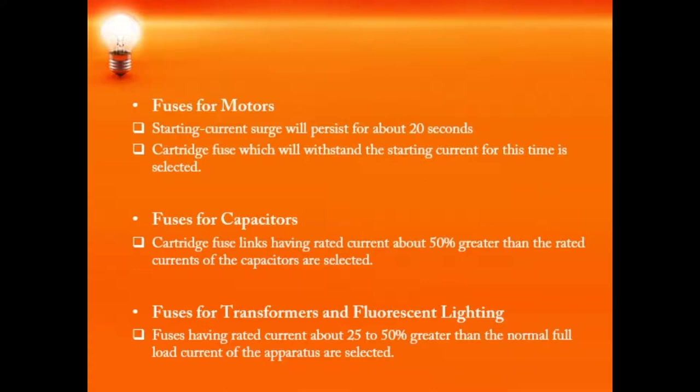For capacitors, if we are using a fuse to protect the capacitor, it is actually a very difficult task because there will be transient current surges during switching operation. Therefore, we use a cartridge fuse with a rated current that is about 50 percent greater than the rated current of the capacitor — that is, about 25 to 50 percent greater than the normal full load current of the apparatus.